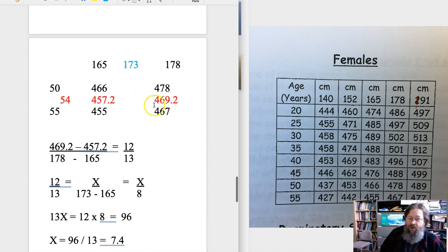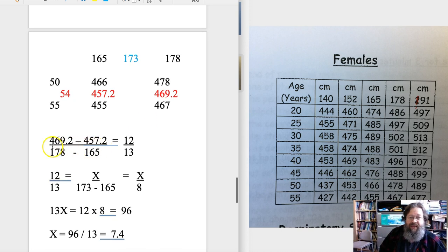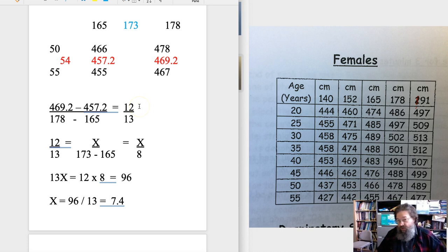We can now add that into our table as our expected value for age 54: 469.2. Now what we do is extrapolate between 457.2 at 165 centimeters in height and 469.2 at 178 centimeters in height. What we really want to know is 173. Notice that with an increase in height we expect an increase in the expected peak flow. So what we're going to do is set this up as 469.2 minus 457.2 or 12. We're expecting a 12 liter per minute increase over this 178 minus 165, which is 13 centimeters increase in height. So this is our slope.